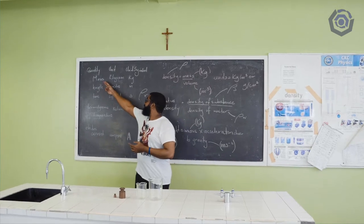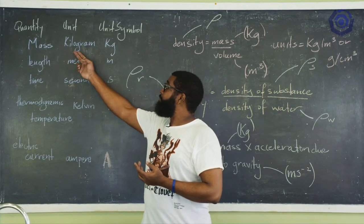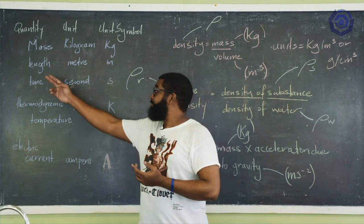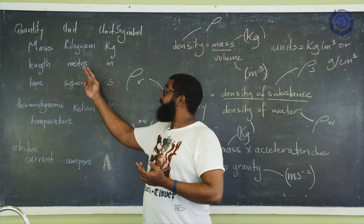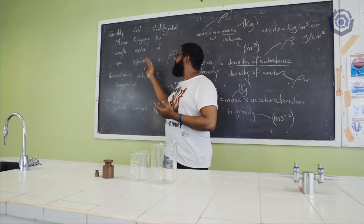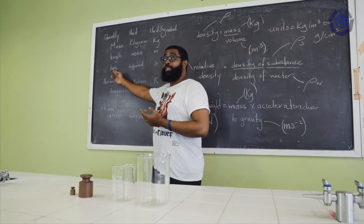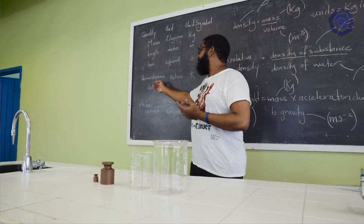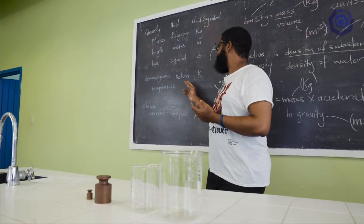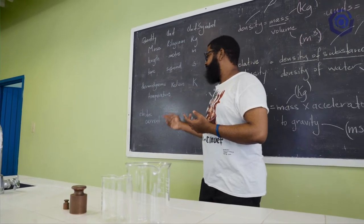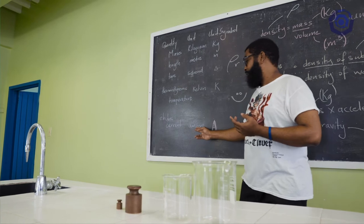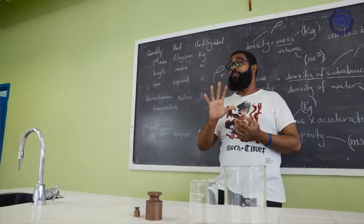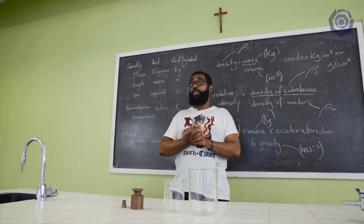First, we have mass, measured in kilograms, symbol kg. Length — the unit is the metre, symbol m. For time, it is the second, symbol s. For thermodynamic temperature, the unit is kelvin, symbol K. And finally, electric current — the unit is the ampere, symbol capital A. These are the five fundamental quantities we use for CSEC Physics.